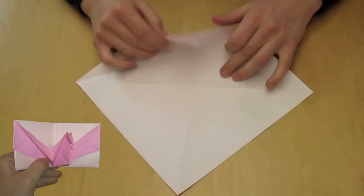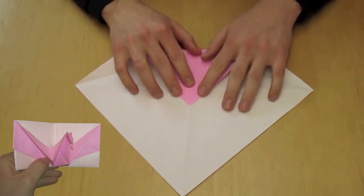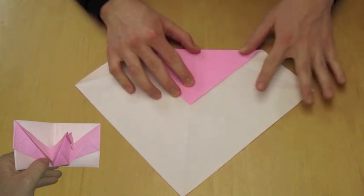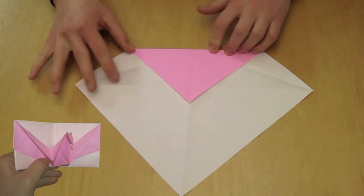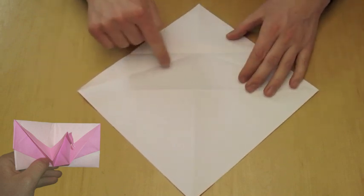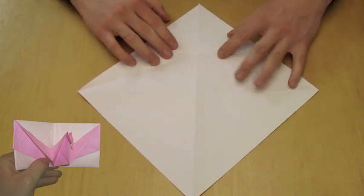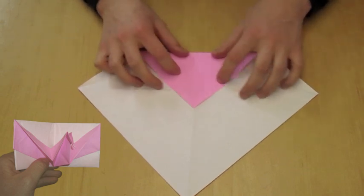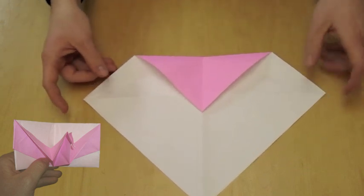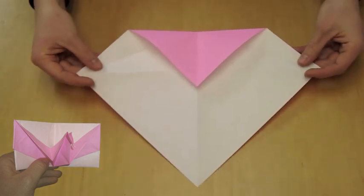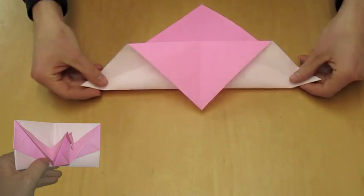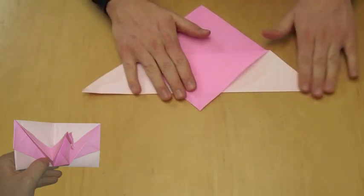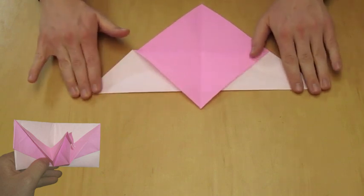Now you're going to fold the tip of the paper to about an inch beyond the center diagonal line that you made before. As you can see, all four of those lines are going to intersect at the same point. Now you're going to mountain fold, which is where you fold the paper away from yourself, the top half behind.